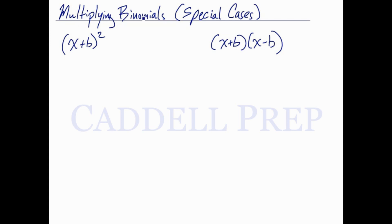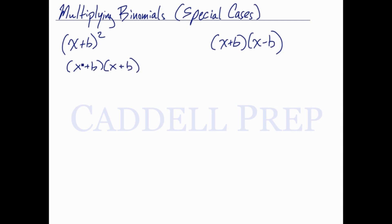Let's go over multiplying binomials special cases. So x plus b squared — what happens if you multiply one binomial by itself? Let's follow it and we'll see what happens.